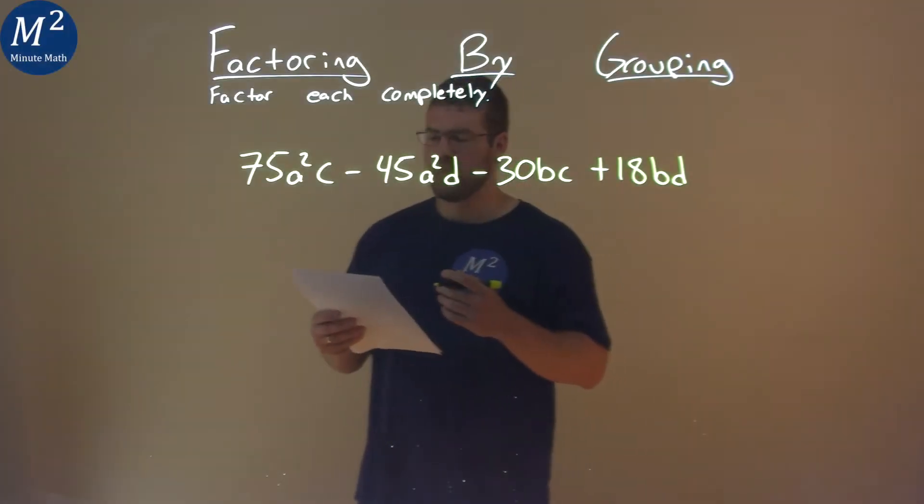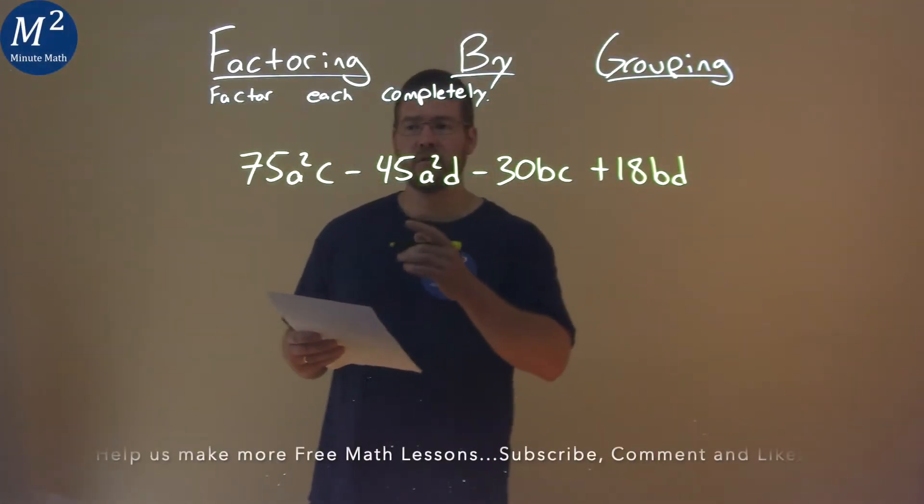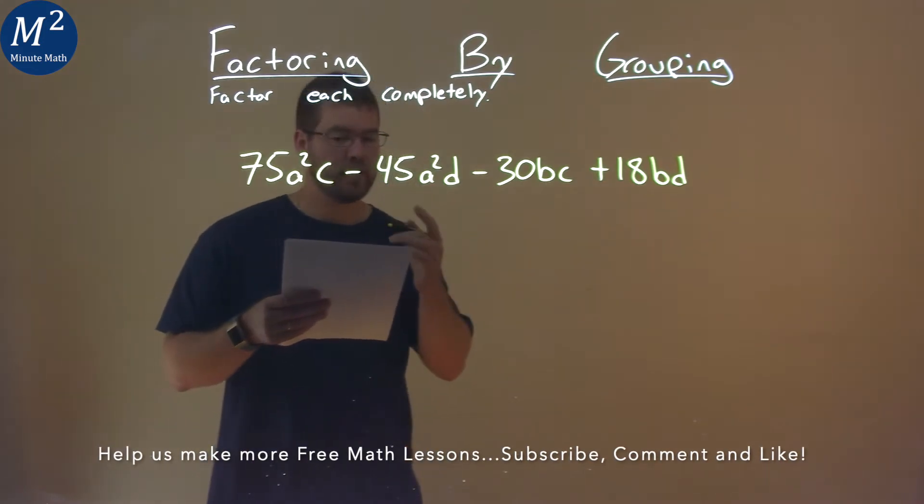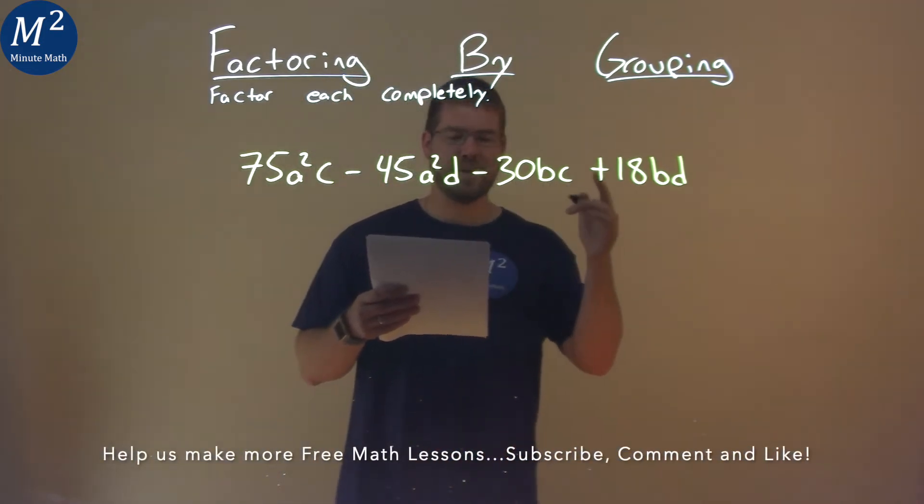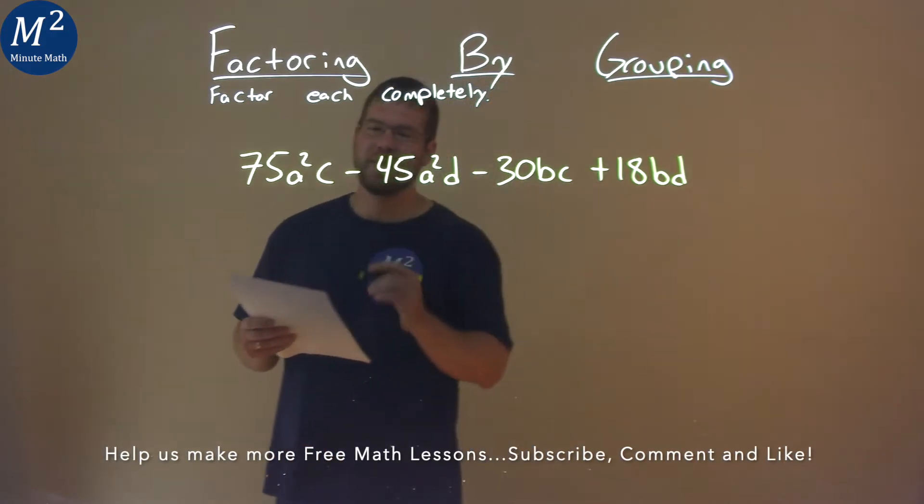We're given this problem right here: 75a²c - 45a²d - 30bc + 18bd, and we need to factor this completely.